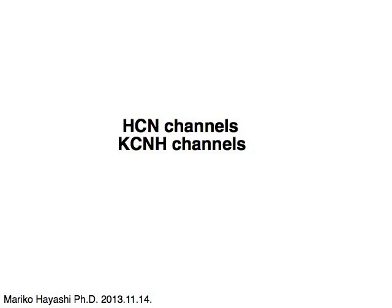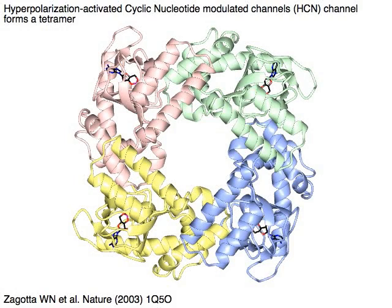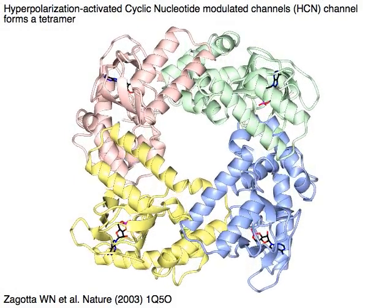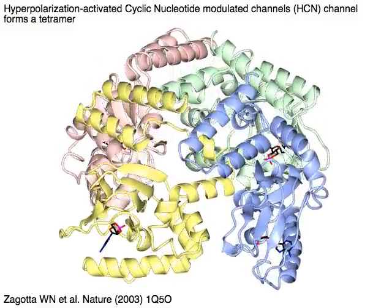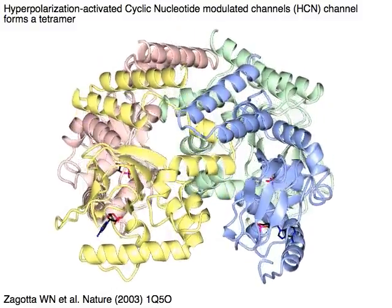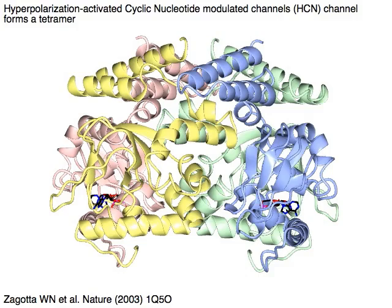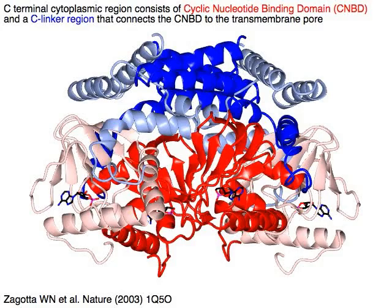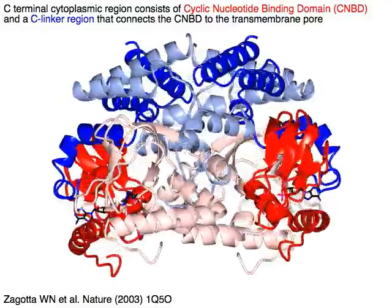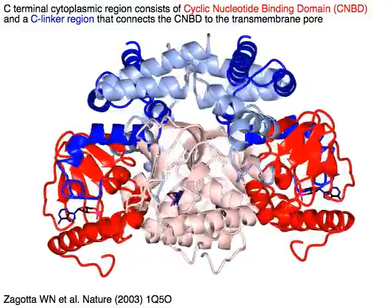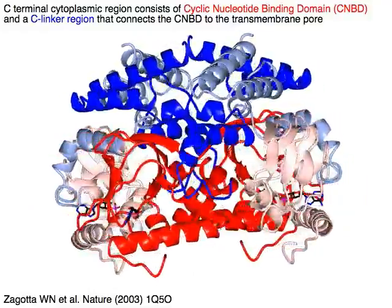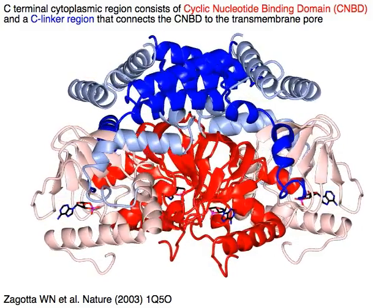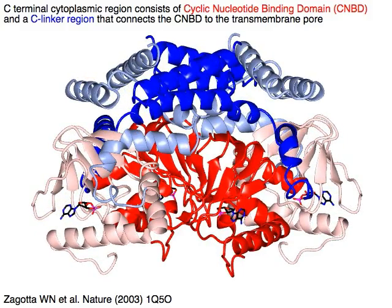HCN channels and KCNH channels. Hyperpolarization activated cyclic nucleotide modulated channels, or HCN channels, form a tetramer shown in four colors. The C-terminal cytoplasmic region consists of a cyclic nucleotide binding domain (CNBD) in red and a C-linker region in blue that connects the CNBD to the transmembrane pore.